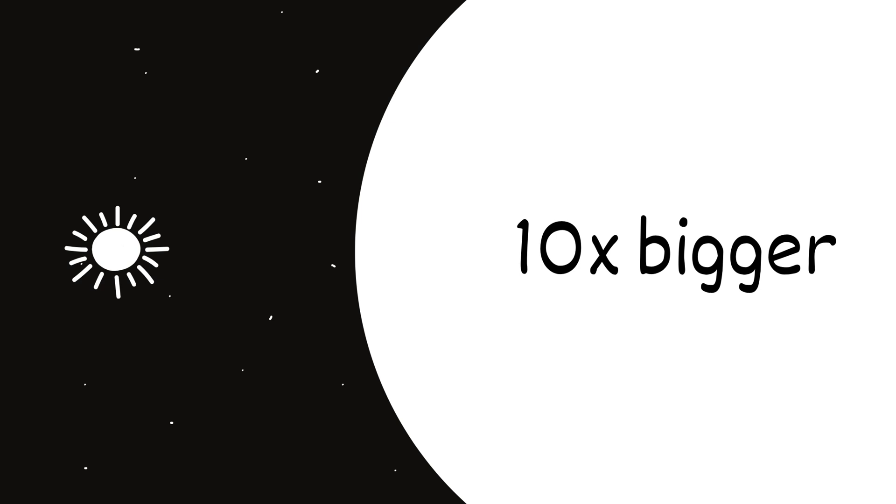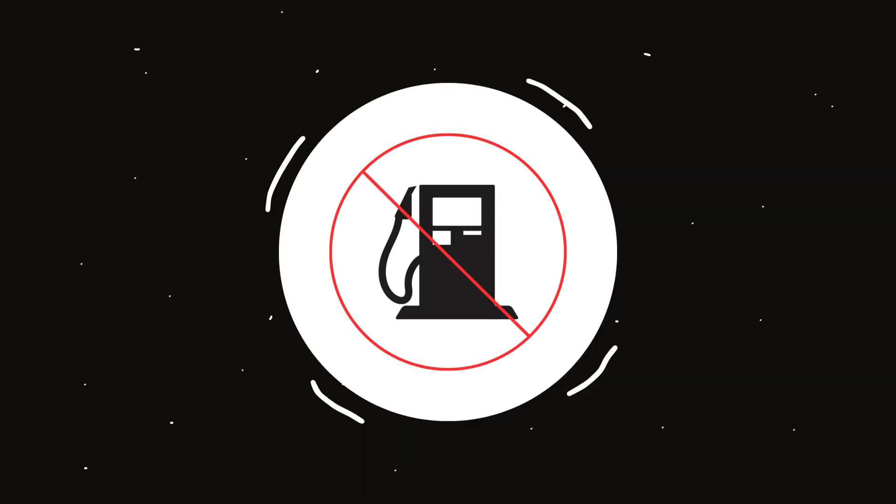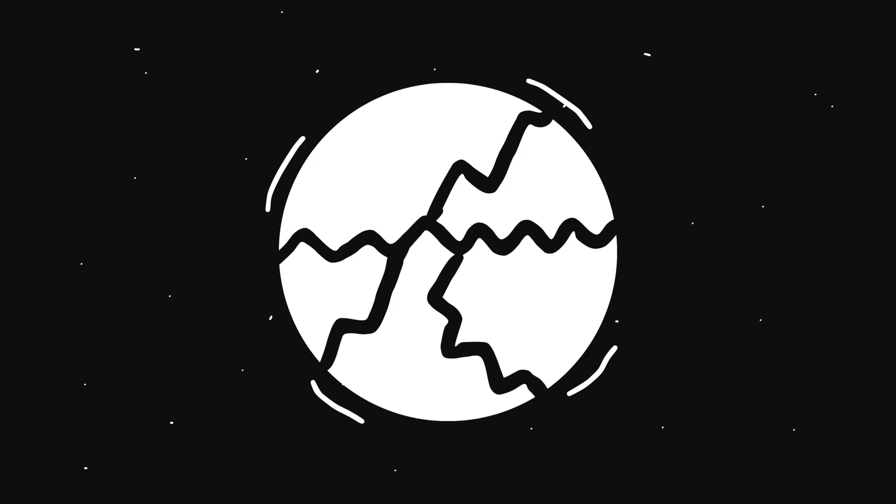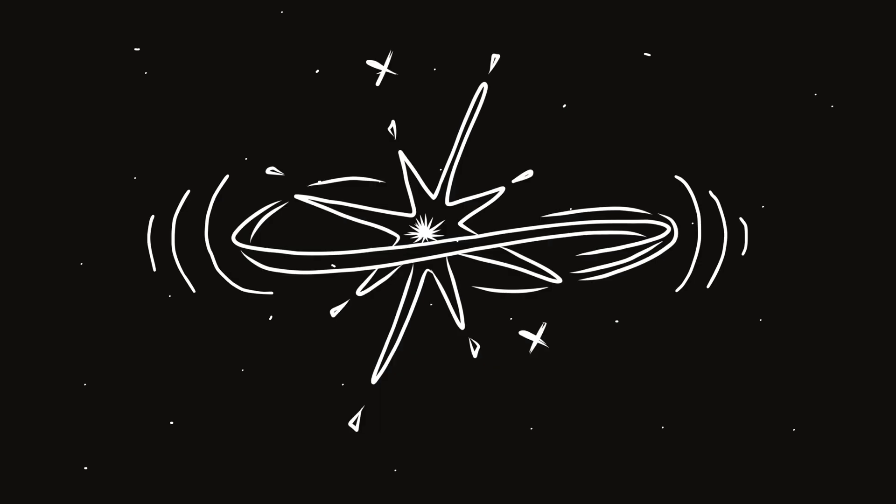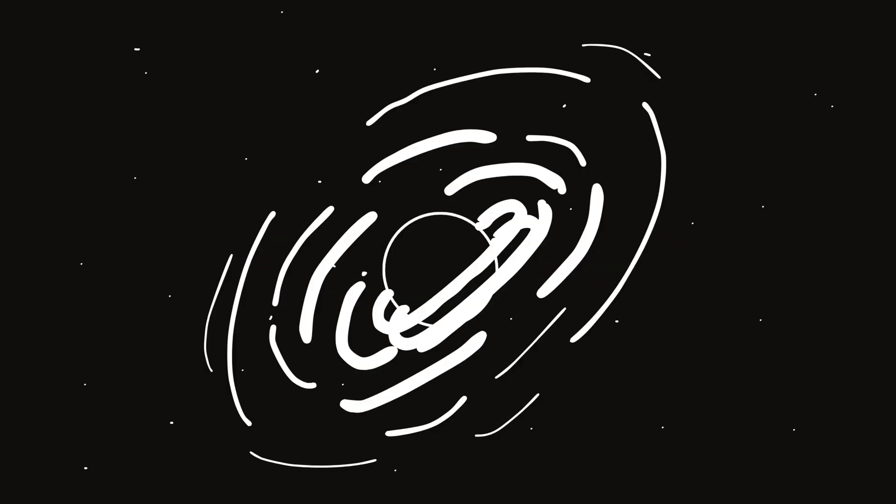Stellar black holes. A stellar black hole starts with a star, not a small one like our Sun. We're talking at least 10 times bigger. When a star runs out of fuel, it can't fight against its own gravity anymore. It collapses, explodes in a supernova, and what's left behind gets crushed into something so dense it rips a hole in space. That's a stellar black hole.